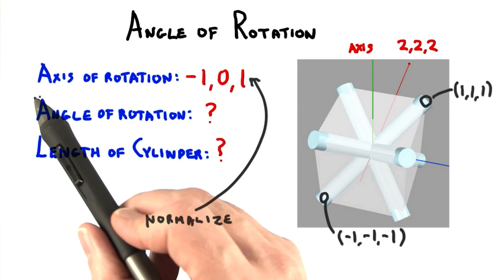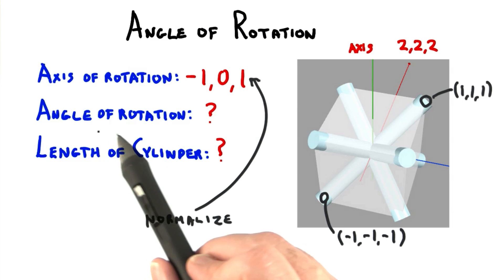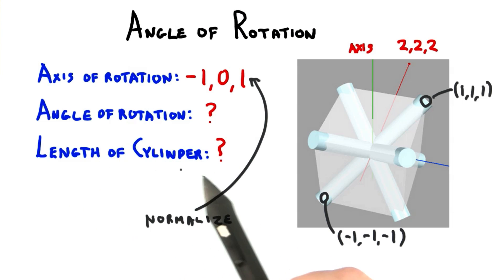These are the facts we need to continue. We've got the axis of rotation. We need the angle to rotate and the length of the cylinder itself.